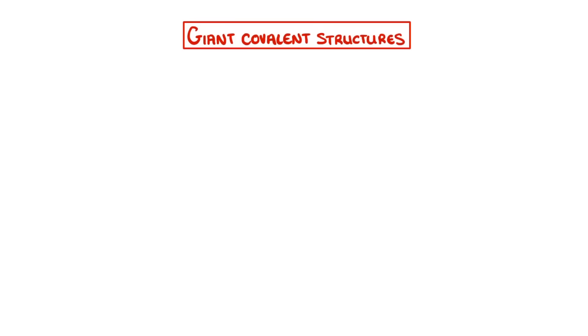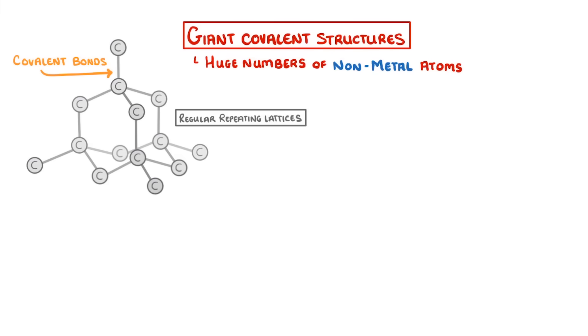Moving on to giant covalent structures. These are made of huge numbers of non-metal atoms, that are all bonded to each other by covalent bonds. And they're generally arranged into regular repeating lattices, which just means that their structure kind of repeats over and over.